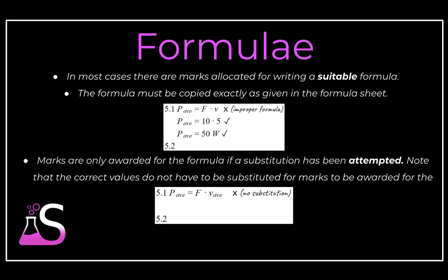The next thing is that if you are using a formula that is given in the formula sheet, it must be copied exactly. And when we say exactly, we mean that the formula P average is equal to F times V average. You will lose the mark if you write it as F times V instead of F times V average. That doesn't mean that you won't get the rest of the marks but you will lose the formula mark. And then another important note is that there is a mark for the formula if you attempt to make a substitution, if there are other values that you've attempted to substitute.